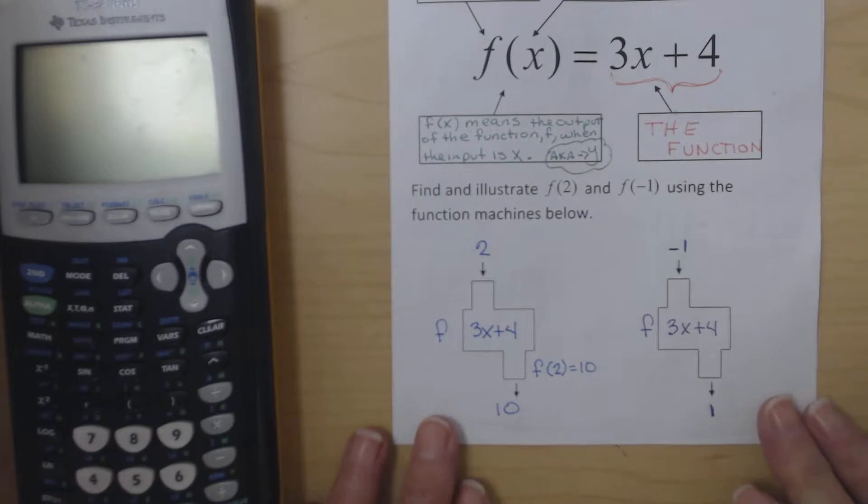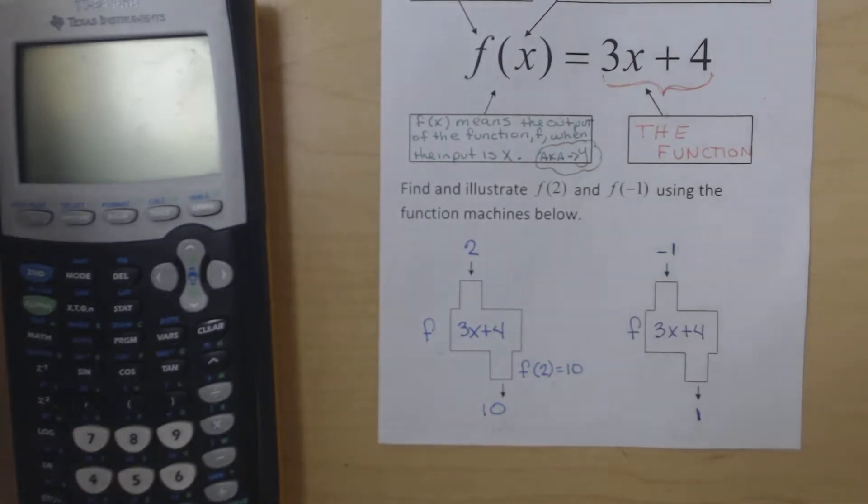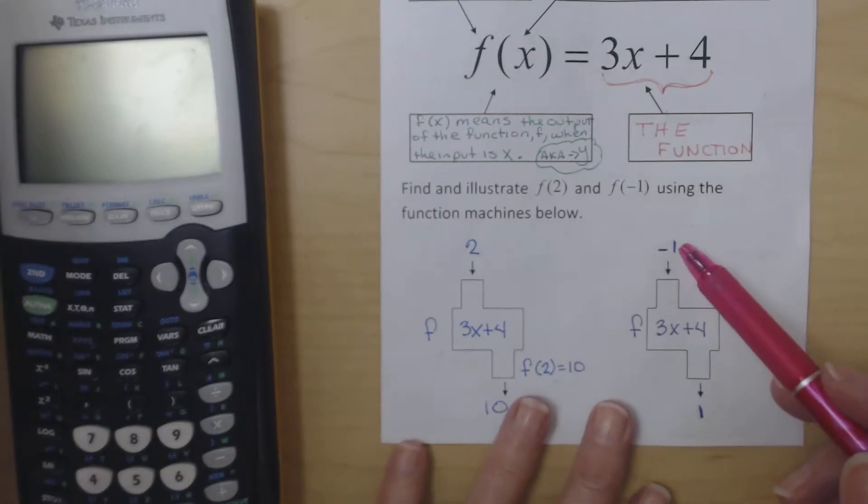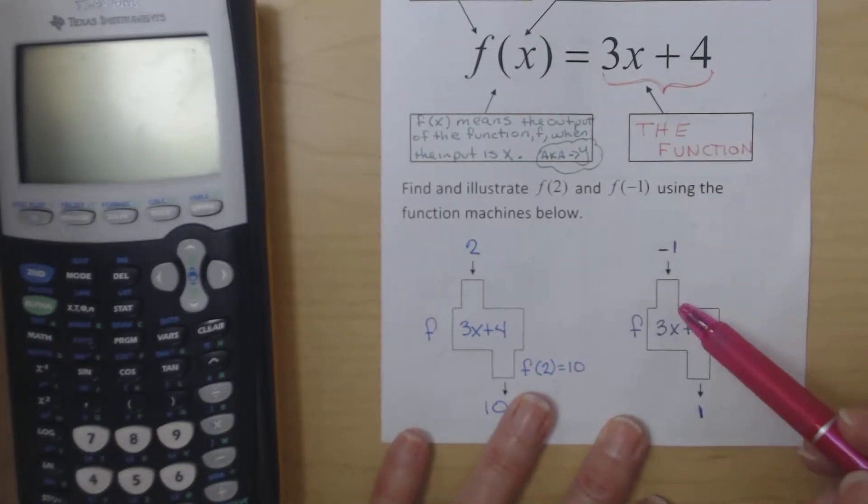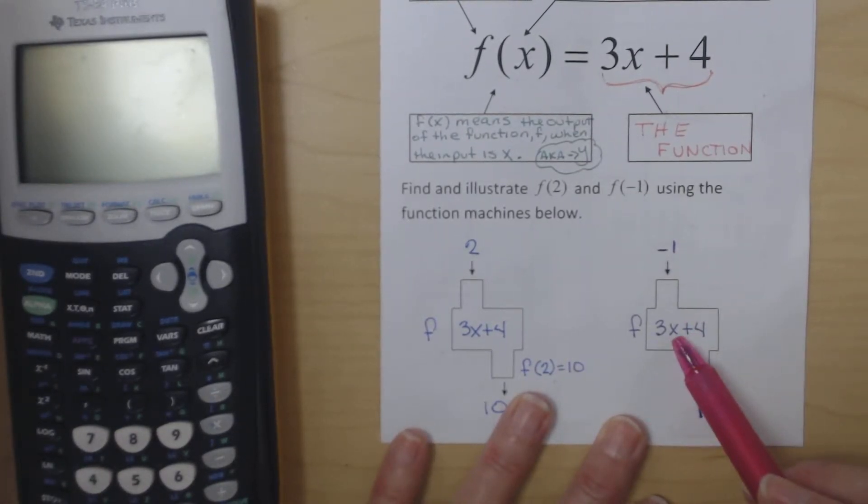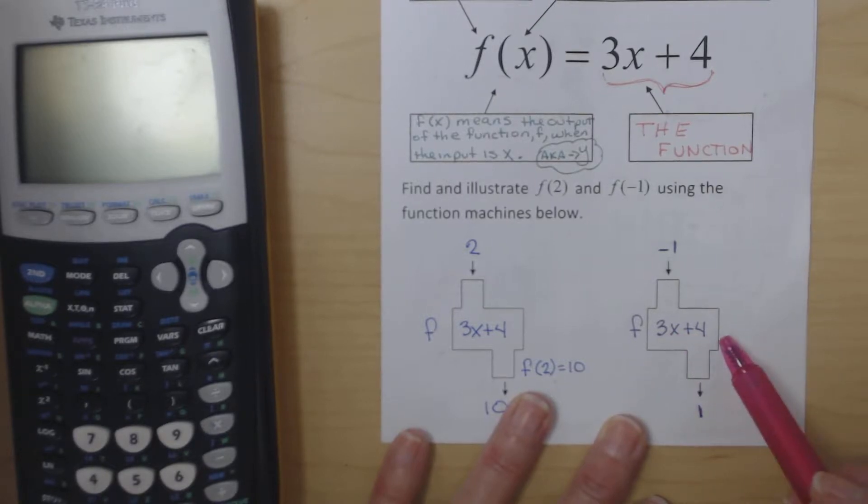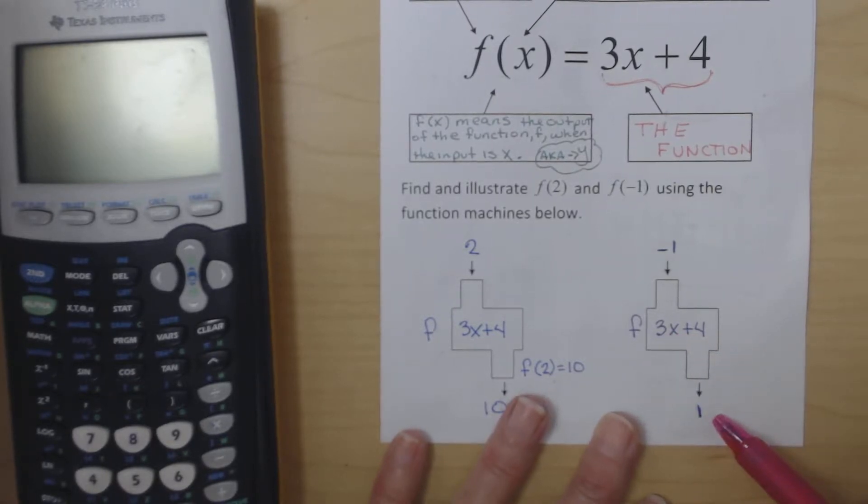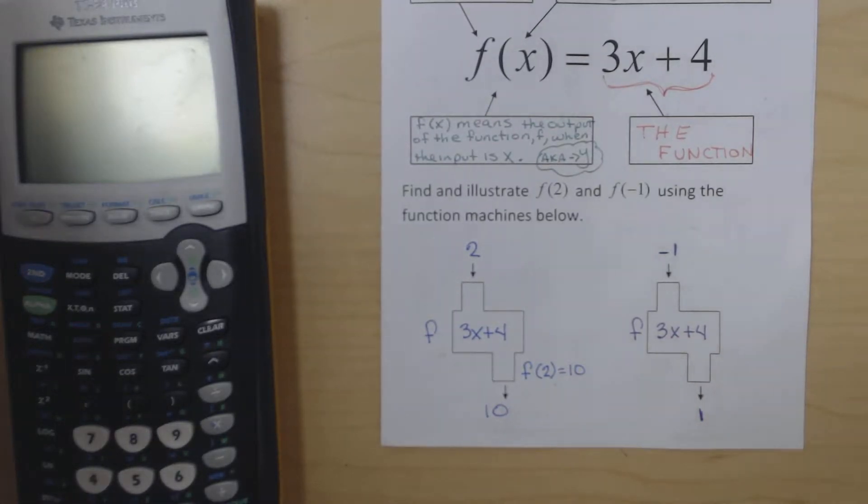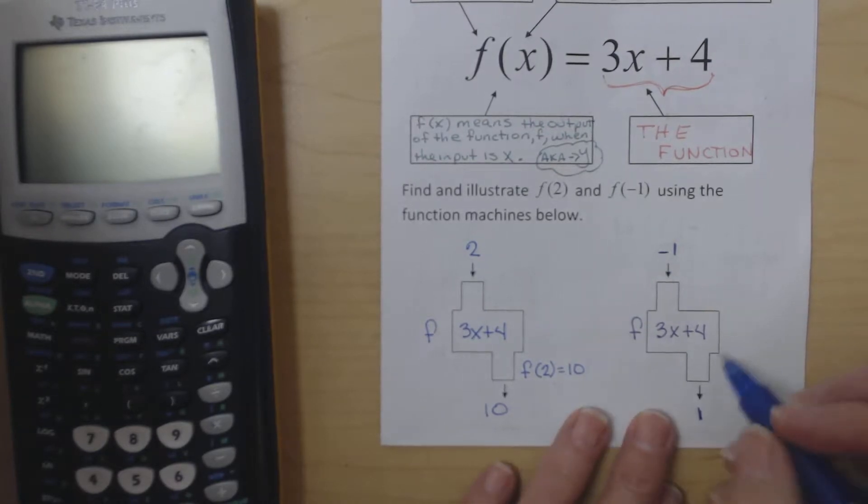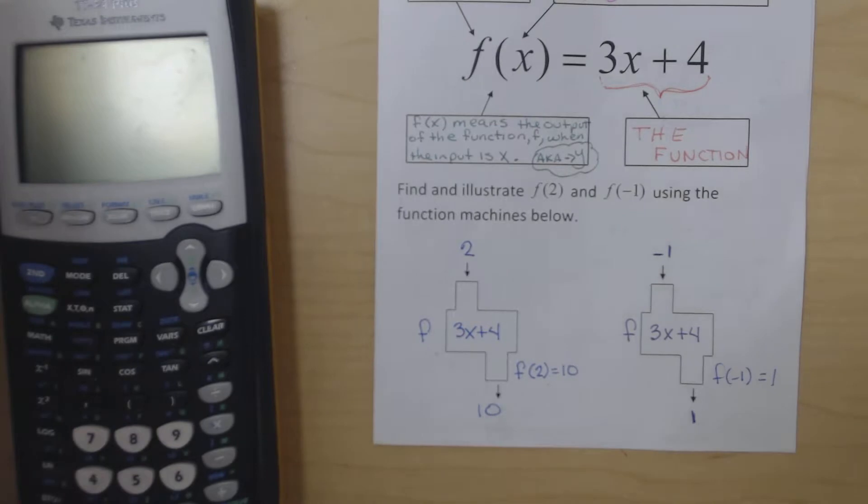On the other one, f(-1). The function 3x plus 4 is being evaluated for -1. Negative 1 is our input. 3 times -1 is -3. Negative 3 plus 4 is 1, so 1 here is our output. So f(-1) is equal to 1.